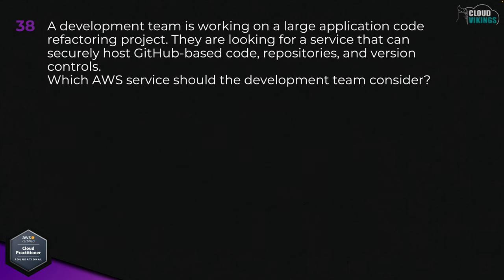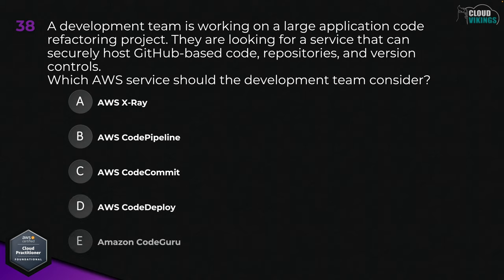Question thirty-eight: a development team is working on a large application code refactoring project and they're looking for a service that can securely host GitHub-based code repositories and support version control. Which AWS service should the development team consider? Options are: A, AWS X-Ray; B, AWS CodePipeline; C, AWS CodeCommit; D, AWS CodeDeploy; or E, Amazon CodeGuru. The answer here would be C, AWS CodeCommit.